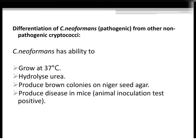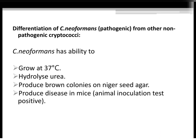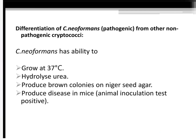Differentiation of Cryptococcus neoformans (pathogenic) from other non-pathogenic cryptococci: Cryptococcus neoformans has the ability to grow at 37°C, it hydrolyzes urea, produces brown colonies on niger seed agar, produces disease in mice, and the animal inoculation test is positive.